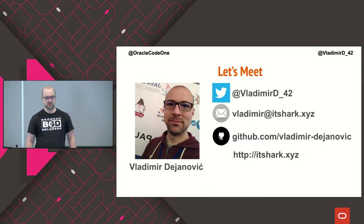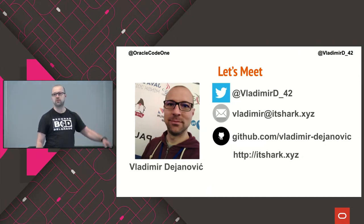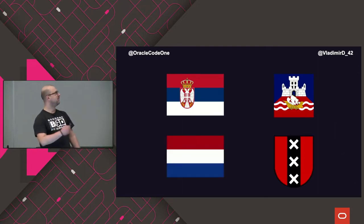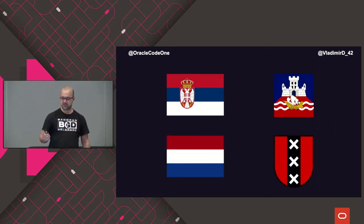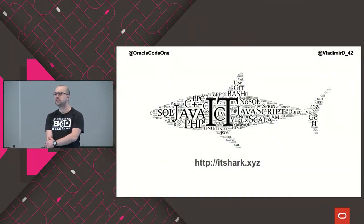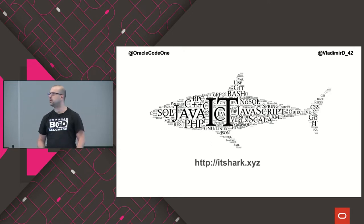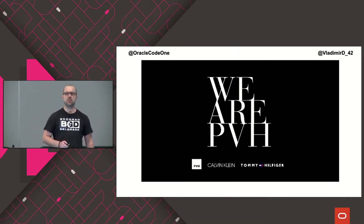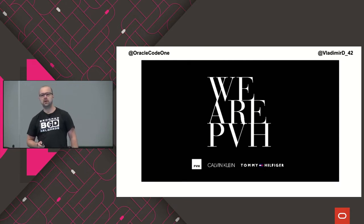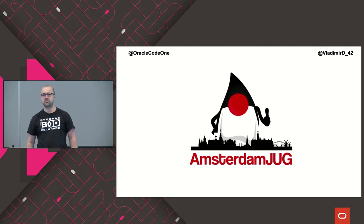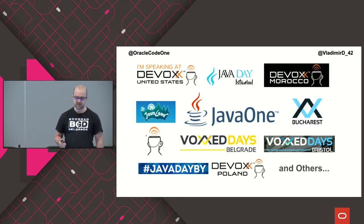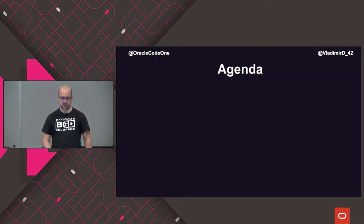Let me introduce myself. My name is Vladimir Dejanovic. This is my Twitter, my email, my GitHub account, my blog — if you want to follow me or contact me online. Originally I'm from Serbia and the beautiful city of Belgrade, but now I live in the Netherlands in the beautiful city of Amsterdam. I've been part of the professional IT scene since 2006 — in other words, I've been getting paid to develop software since 2006, working on all kinds of projects and companies. My day job is Senior Director of B2C and B2B Technology at PVH, a fashion tech company behind brands such as Calvin Klein and Tommy Hilfiger. My side job is basically being founder and leader of the Amsterdam Java User Group, so I don't get a lot of sleep. I'm also a speaker at conferences around the world and a Java One Rockstar and Code One Star.